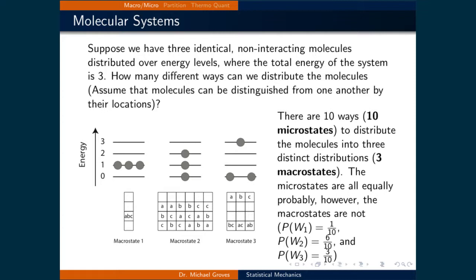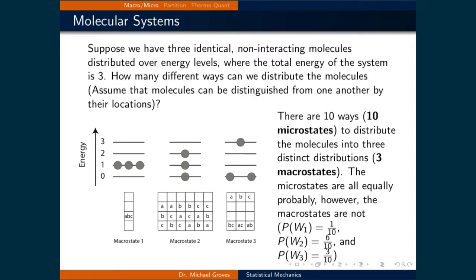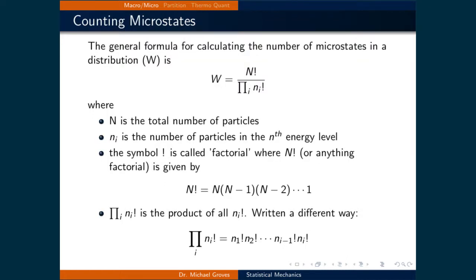For each macrostate there are a different number of microstates. For macrostate one, there is only one way to put all three molecules into energy level one. For macrostate two, there are six ways to arrange the three molecules individually in energy levels zero, one, and two. Finally, there are three ways to distribute the three molecules where one is in energy level three and the other two are in energy level zero. Since there are ten ways to arrange the molecules so that the total energy is three, the most probable macrostate is number two. The general formula for calculating the number of microstates in a distribution is W = N! divided by the product of n_i!, where N is the total number of particles and n_i is the number of particles in the i-th energy level.